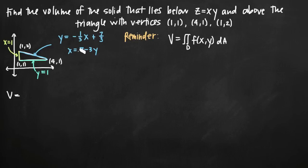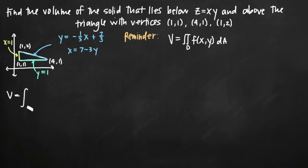Because we're integrating with respect to x first, our inner integral will have limits of integration with respect to x, and our outer integral will have limits with respect to y. The lowest possible value y can attain in this region is 1 — that's the teal line, y equals 1. The highest possible value is at the point y equals 2, so our outer integral runs from 1 to 2.